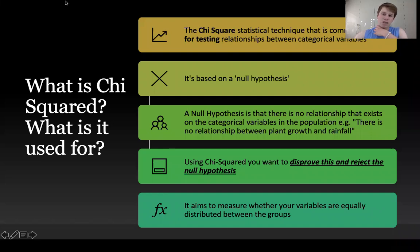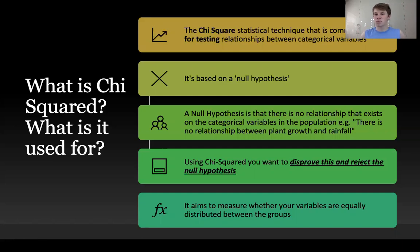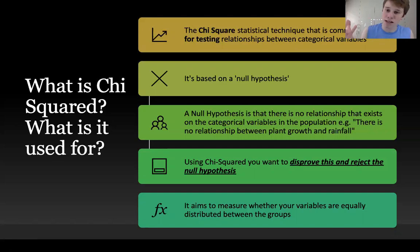The chi-squared technique is commonly used for testing relationships between categorical variables. Similar to Spearman's rank, it tests whether there is a level of relationship between variables, but in a different way. It's based on a null hypothesis — the idea that there is no relationship between the two variables. For example, a null hypothesis might be: there is no relationship between the level of rainfall in an area and plant growth. Using chi-squared, you can disprove this and reject the null hypothesis.